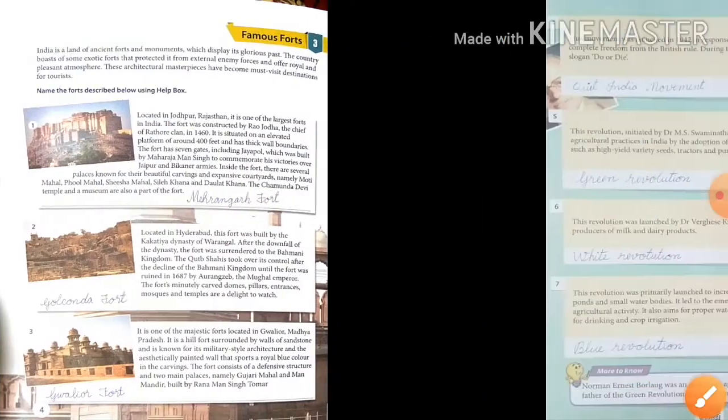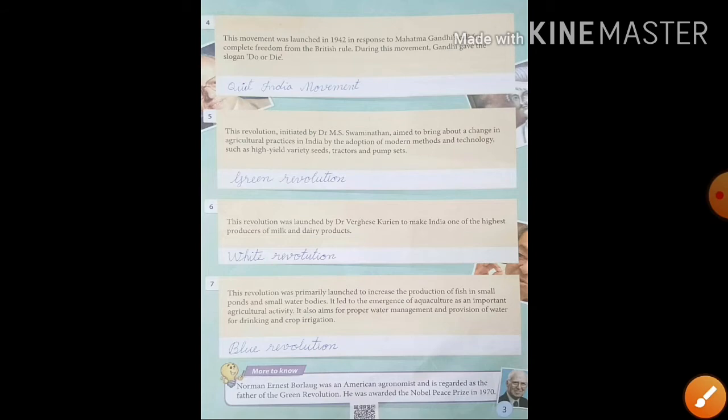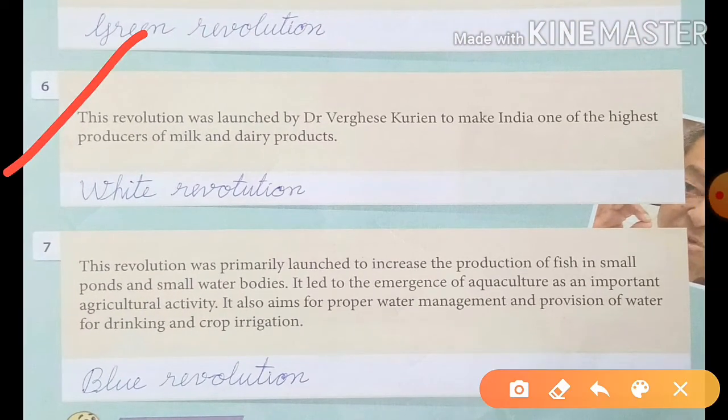Sixth point: This revolution was launched by Dr. Verghese Kurien to make India one of the highest producers of milk and dairy products. Dairy production mein India ko number one banaane ke liye Dr. Verghese Kurien ne is revolution ka start kiya tha. Iska naam hai White Revolution.